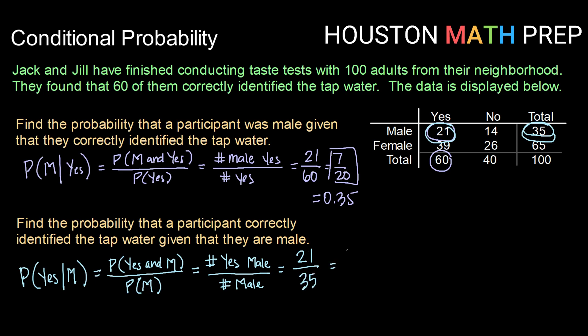So reducing that we get, reducing by 7 we can get 3 over 5, or using a decimal approximation that would be 0.6.